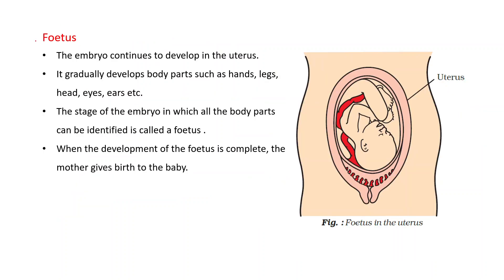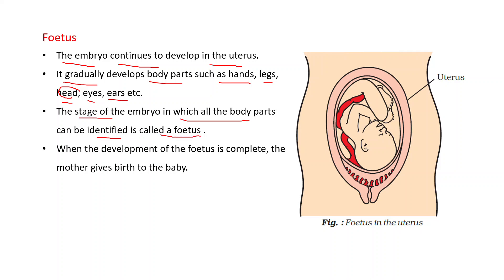Now let's discuss the fetus. The embryo continues to develop in the uterus. It gradually develops body parts such as hands, legs, head, eyes, ears, etc. The stage of the embryo in which all the body parts can be identified is called a fetus.